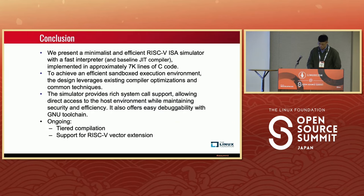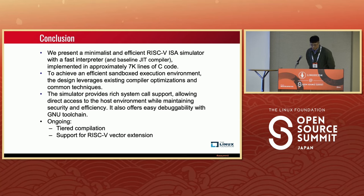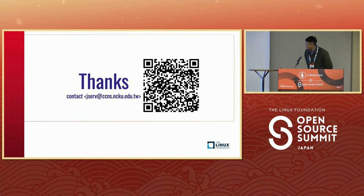In conclusion, our project RV32EMU is a compact and efficient open-source simulator with a fast interpreter and baseline JIT compiler. It is implemented in about 10,000 lines of C code — relatively simple, small, and with acceptable performance. Ongoing tasks include tiered compilation and support for the RISC-V vector extension. If you're interested, you can scan the QR code or contact us via email.